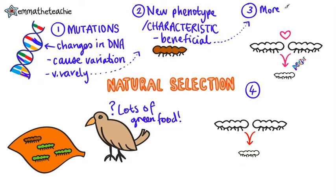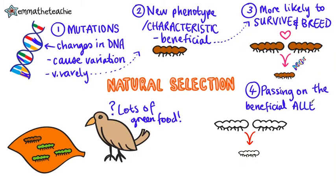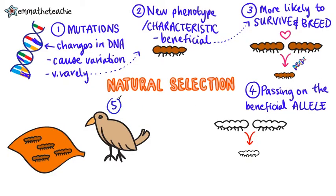So if this new characteristic is beneficial, the individuals are more likely to survive and breed. When this happens, they're going to pass on that beneficial allele to their offspring. This will happen again and again until all of the population possesses the beneficial allele. We say that the population has evolved.